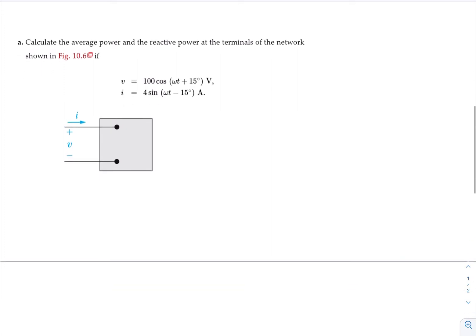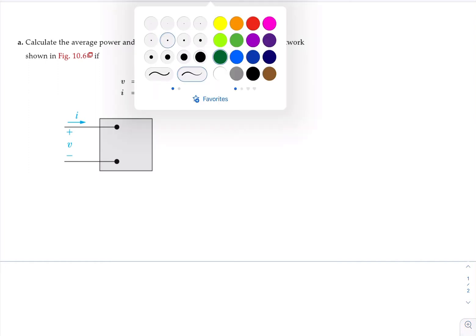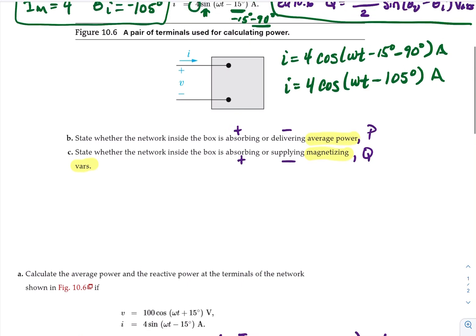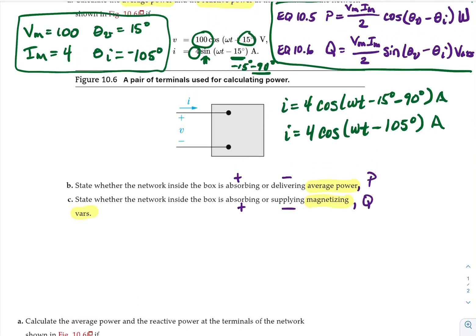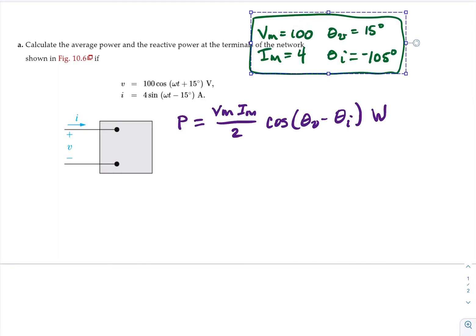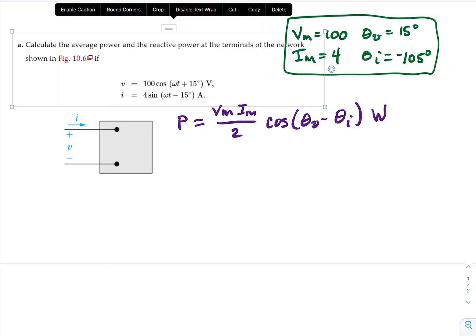Calculate the average and reactive power. So average power is P equals V sub M times I sub M over 2 times cosine theta sub V minus theta sub I. And we'll copy them here.